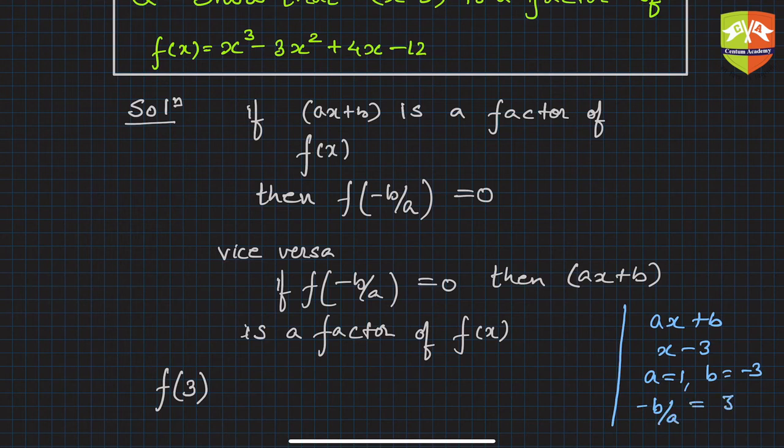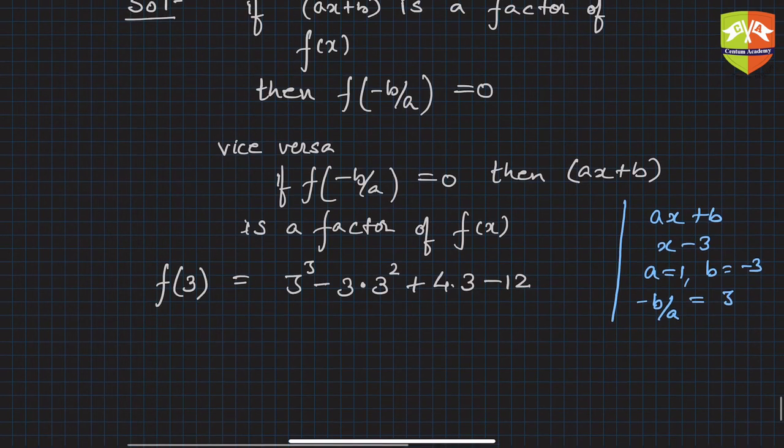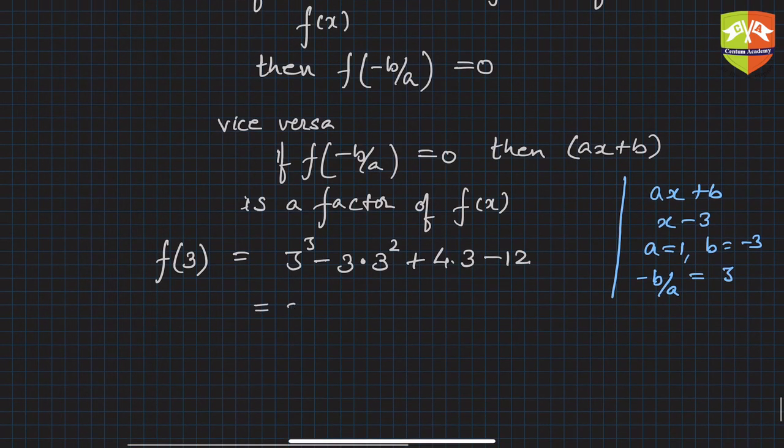So f(3), let's put the values: 3³ - 3×3² + 4×3 - 12. That is how you substitute the value of x. What is this value? This is 27 - 27 + 12 - 12, which is very clearly 0.